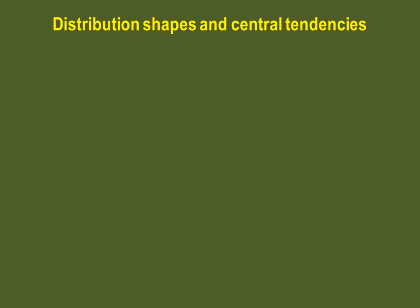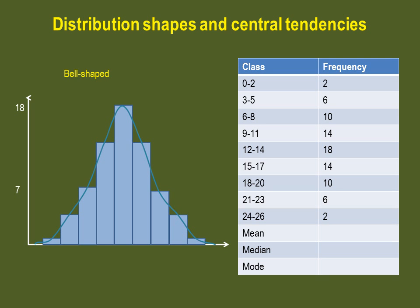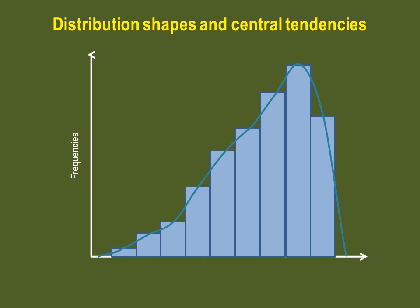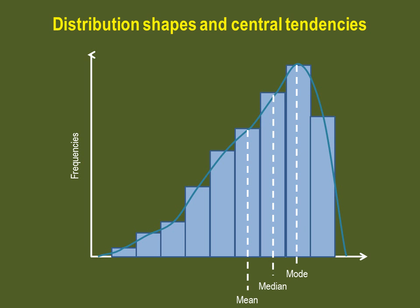In a given distribution, the values of the central tendencies are not necessarily equal, and this is reflected in the shape of the distribution. In a perfectly bell-shaped distribution, the mean, median, and mode are all equal — for example, all equal to 18. In a right-skewed distribution, the mode is lower than the median, which is lower than the mean. It is the exact opposite in a left-skewed distribution, where the mean is lower than the median, which is lower than the mode. The more skewed a distribution is, the bigger the difference between the central tendency measures.